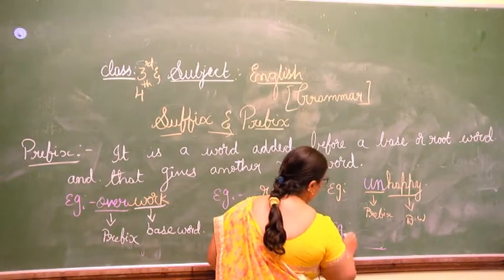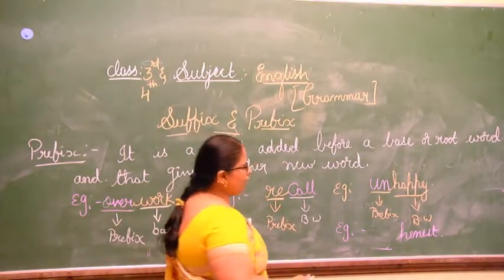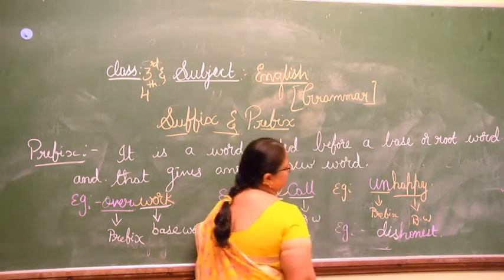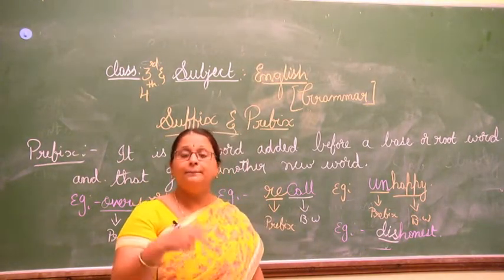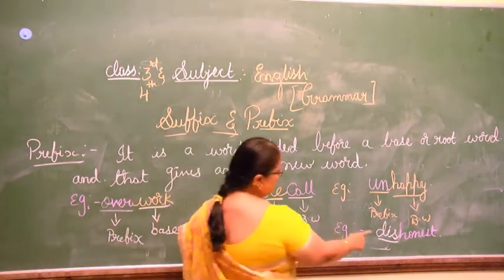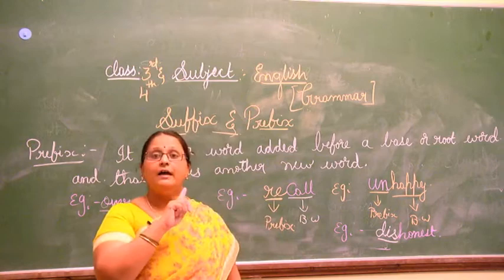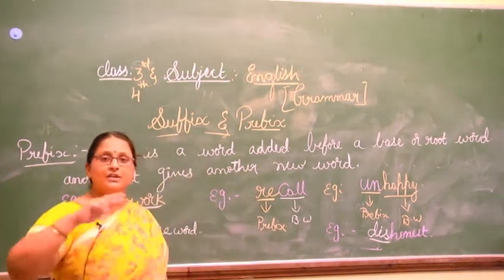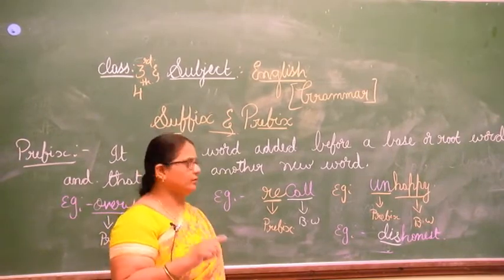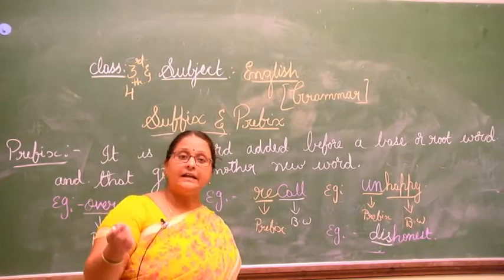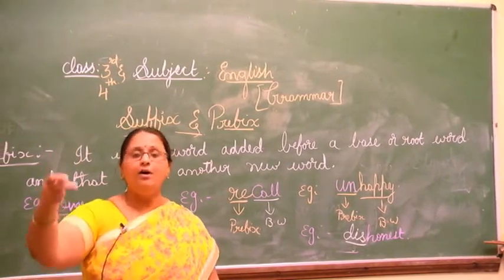One more example: 'honest', H-O-N-E-S-T, is the base word. If you add the prefix 'dis', it becomes 'dishonest'. 'Honest' means being sincere and faithful, but when you add the prefix 'dis' it becomes 'dishonest' — the opposite of honest. Like this, we can also write opposite words by adding prefixes.